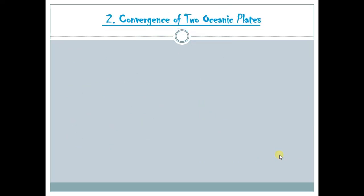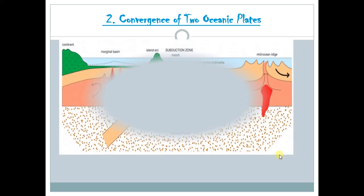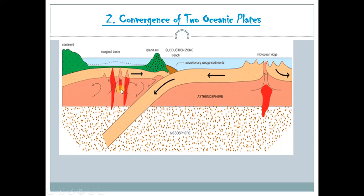Another type of convergent plate boundary is the convergence of two oceanic plates. For example, when we have two oceanic plates bumping against each other, since they are both denser, the one which is much older and denser would actually subduct, as you can see in the picture. One of them would subduct beneath the other one, and that's why we have a trench being formed. We have what we call the subduction zone, and of course there would be formation of island arcs as well.